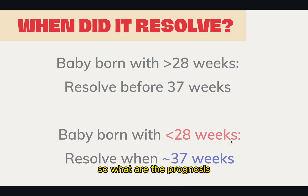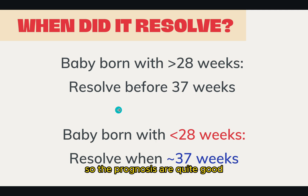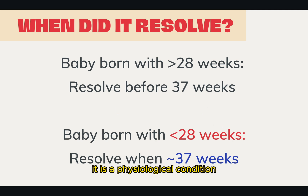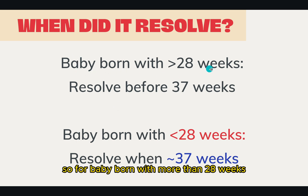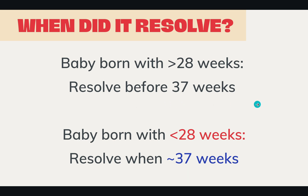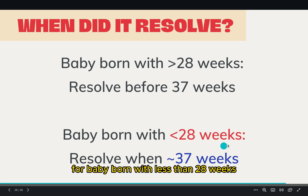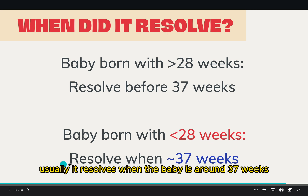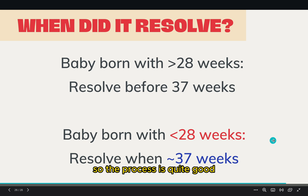So what is the prognosis? The prognosis is quite good. As I said, it is not a disease — it is a physiological condition. For babies born with more than 28 weeks, it usually resolves before they achieve 37 weeks. For babies born with less than 28 weeks, it usually resolves when the baby is around 37 weeks. So the prognosis is quite good.